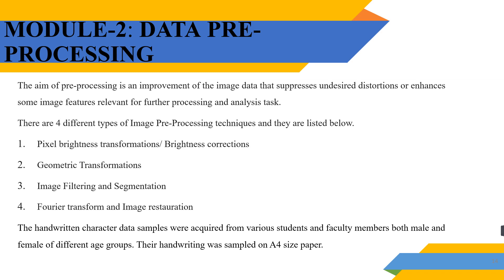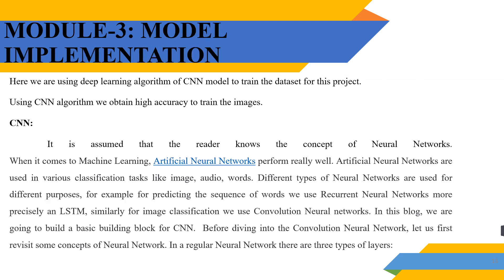In the CSV file, the null values will be removed, and the noise values and improper values will be segregated. Then we implemented the CNN model — Convolutional Neural Network — for the identification of handwritten Tamil characters.